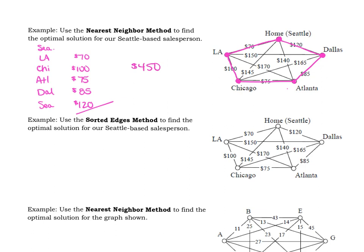All right. Switching this to the sorted edges method, we're going to use the same graph, but we're going to switch to the other. And the sorted edges method is also known as the cheapest link method. You will see both of those terms. And so kind of keep that in mind, especially as you're working on the online homework.